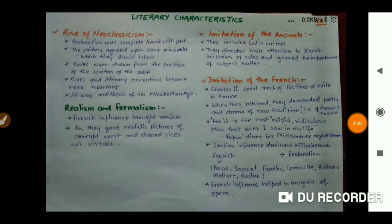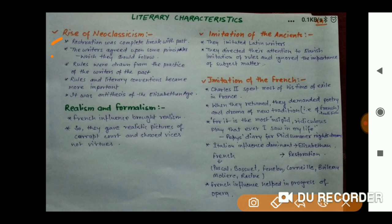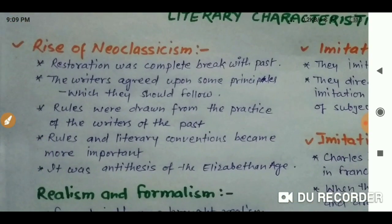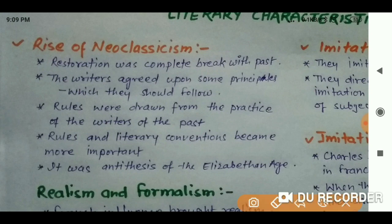The Restoration Age was a complete break with the past, and writers agreed upon some principles which they should follow. Neoclassicism is about following rules and making ideals — some writers followed rules drawn from the practice of writers of the past. Rules and imported literary conventions became more important than imagination.